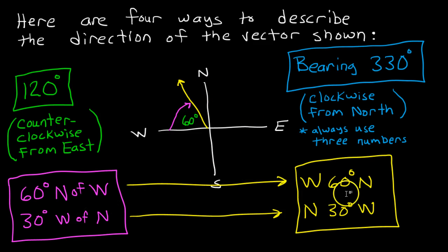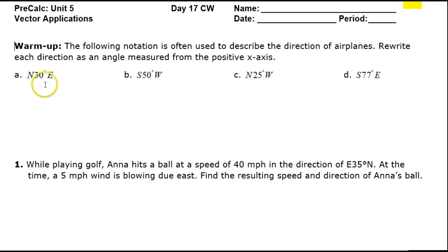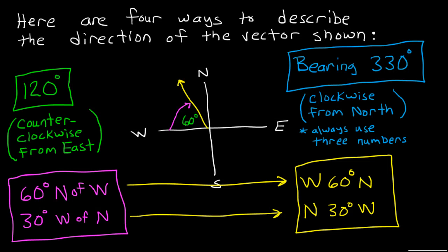But we also have these methods of describing direction when we are dealing with north, south, east, or west. Let's talk about this version shown here in yellow. For this warm-up, let's write each of these angles, each of these directions, as an angle measured from the positive x-axis. In other words, we're going to convert from this yellow way of describing direction to this green way of describing direction.